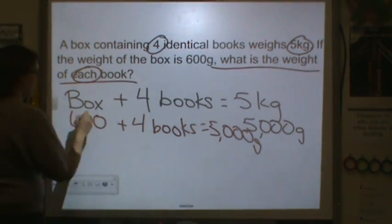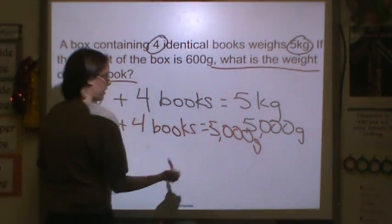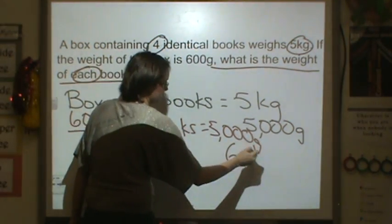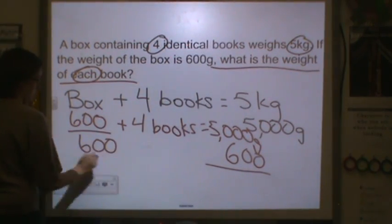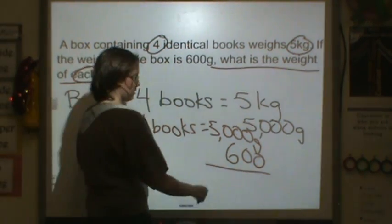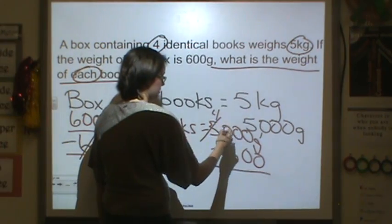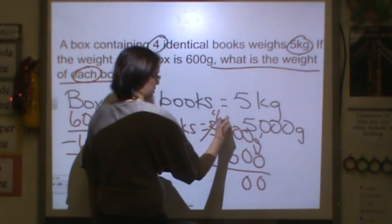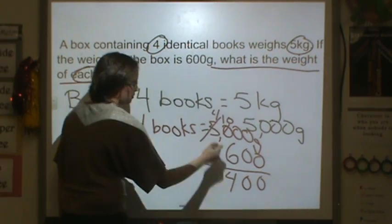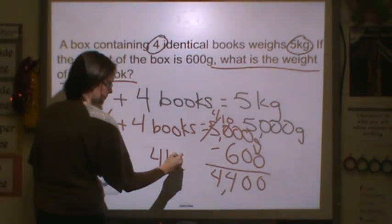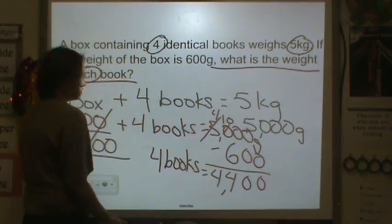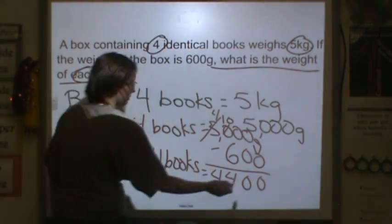First we're going to get this 600 from this 5,000. So we're going to subtract on both sides. Remember, 600 minus 600 becomes nothing. We have to regroup here. So 6 from 10 is 4. So I know that the four books equal 4,400 grams.